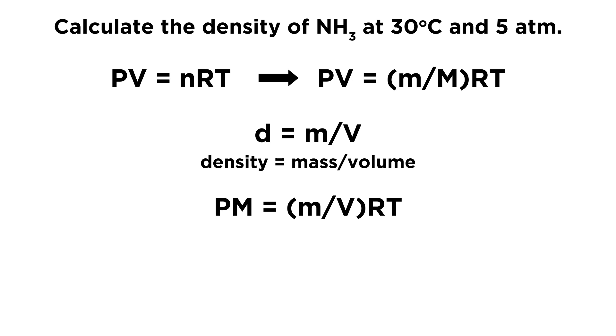So let's multiply both sides by big M and divide both sides by V, and that is going to give us PM equals little m over V times RT.